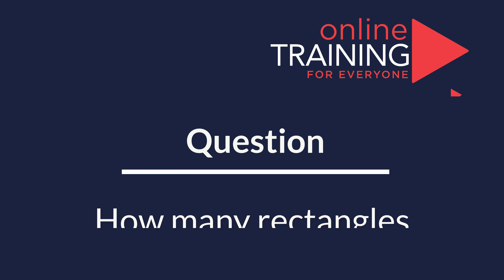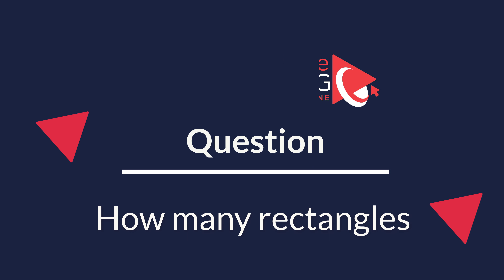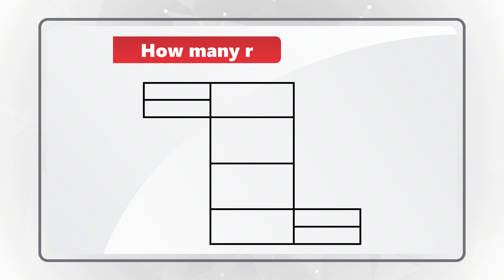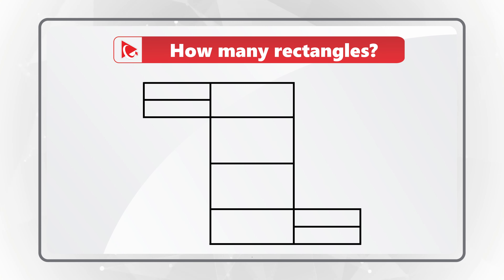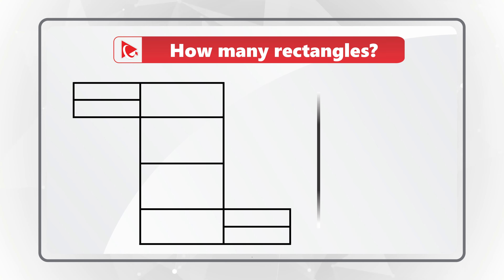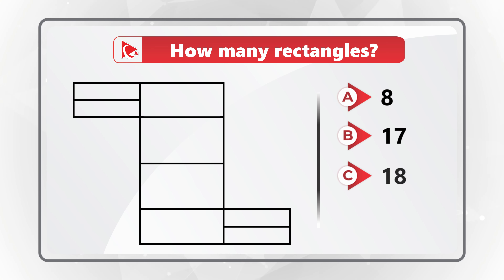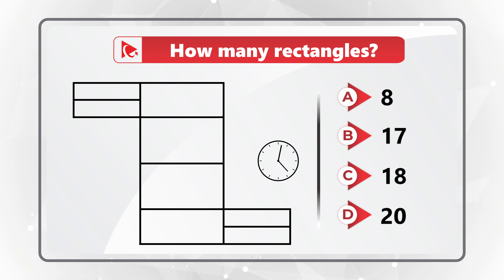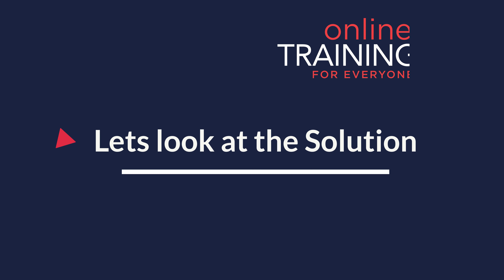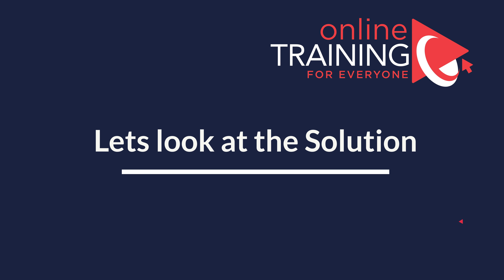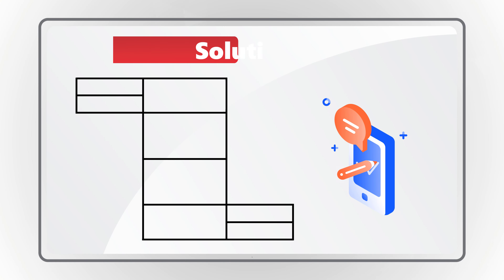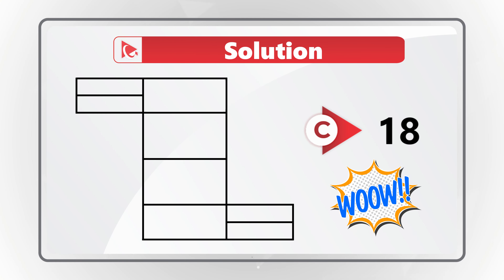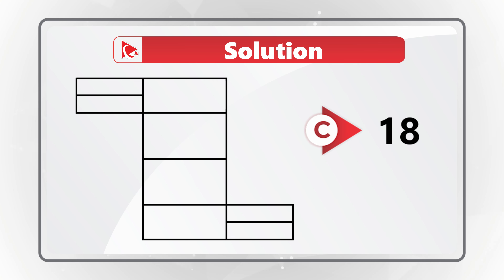Here's an amazing question to test your analytical and spatial reasoning skills. You need to determine how many rectangles are present in the picture. Take a close look and choose from four choices: A: 8, B: 17, C: 18, D: 20 rectangles. I counted 18 rectangles in this shape — let me show them all to you.